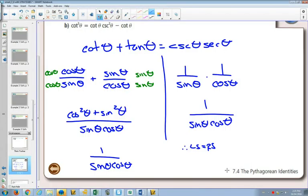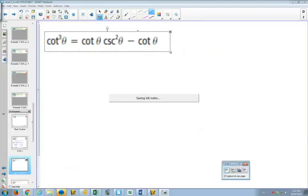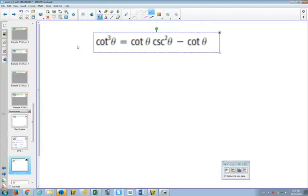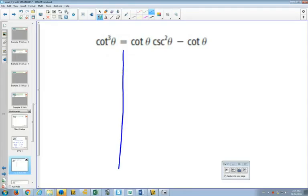For our second example here, again, we'll write it out. This one should have a bit of scariness built into it, because we have cotangent cubed. Is that a little bit scary? We haven't had cubed ones yet, so it should be a little bit scary.